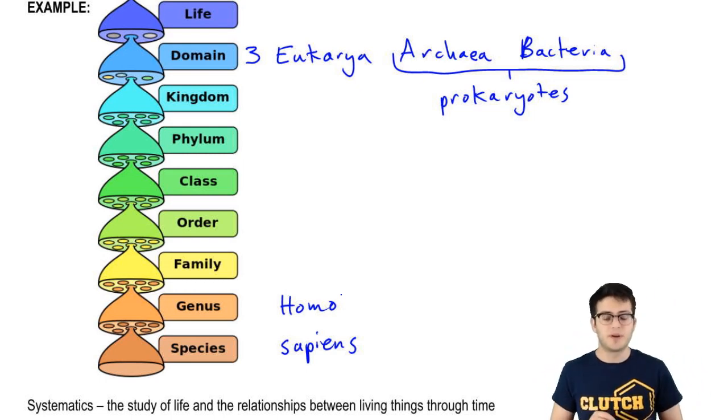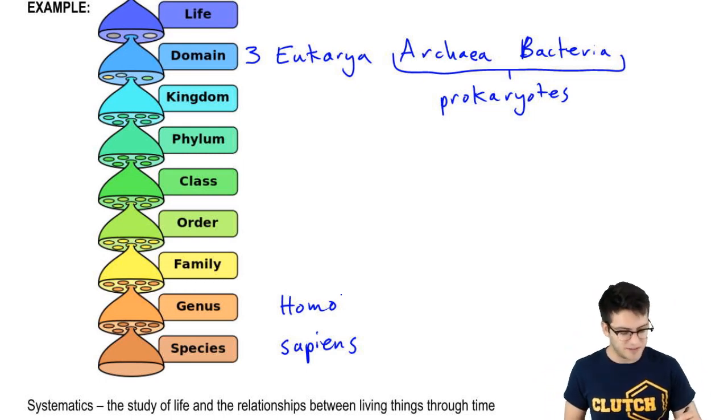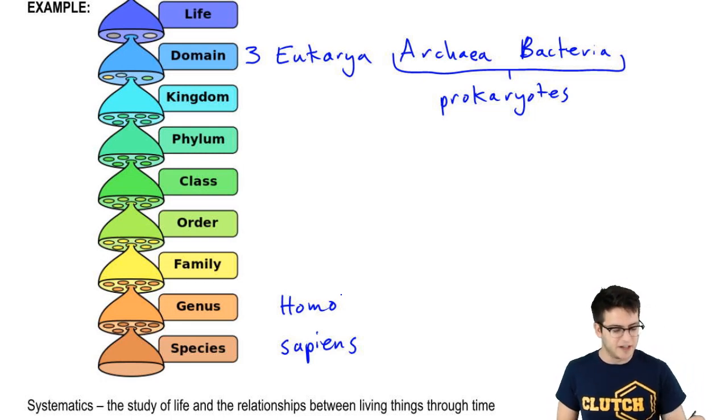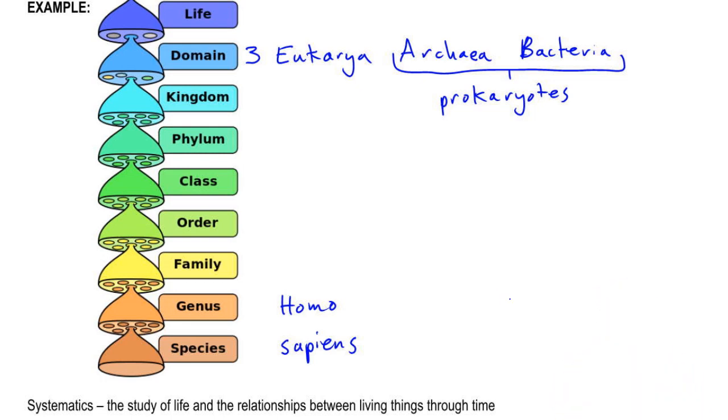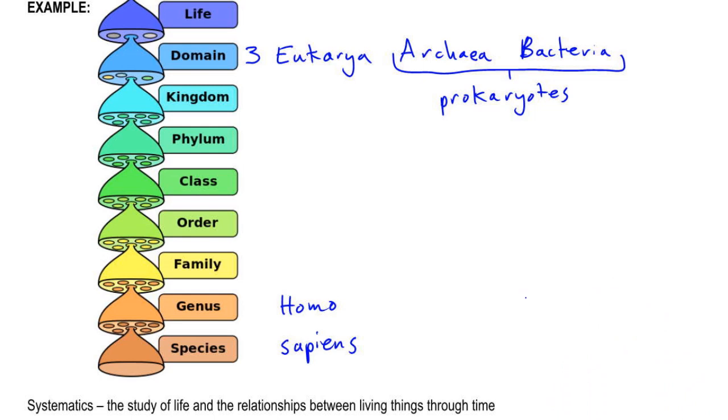An example that we've already talked about, actually, of a bacteria genus and species would be, let me take myself out of the image here so you can see this, is Streptococcus pneumoniae. And that's the bacteria that gives you pneumonia.